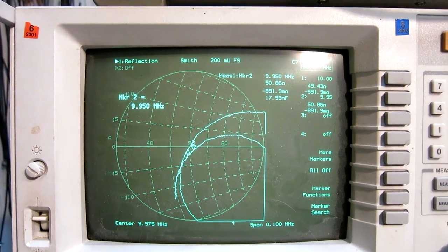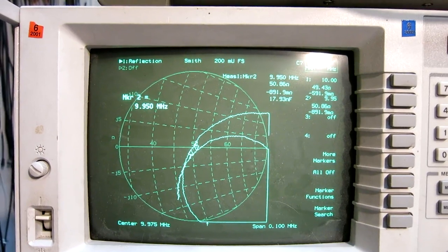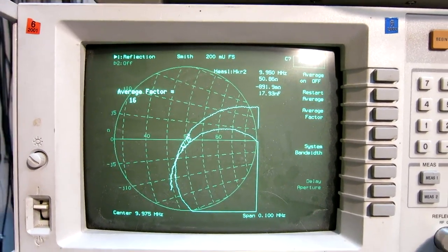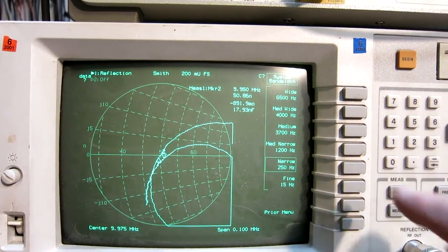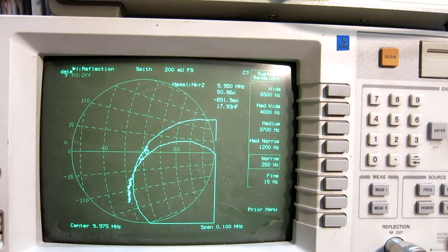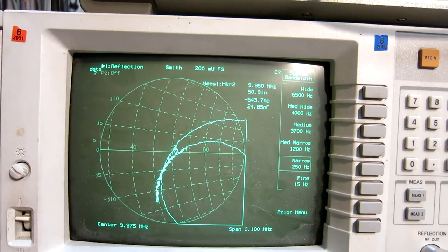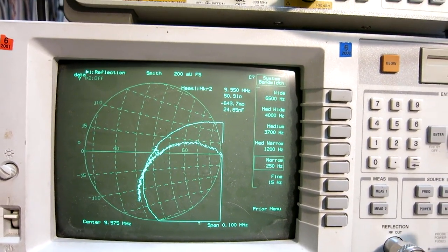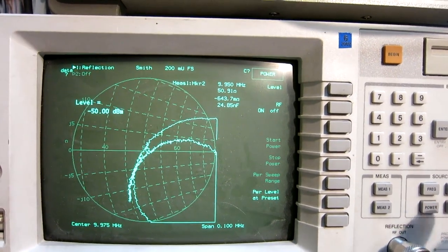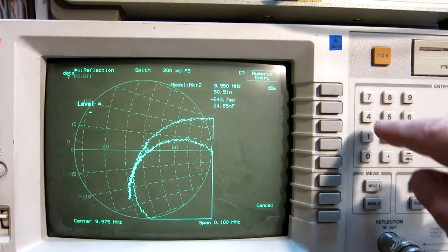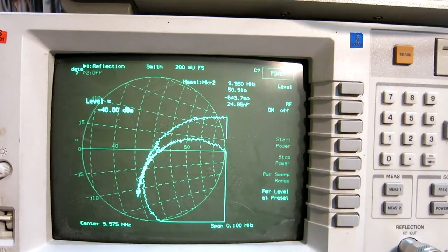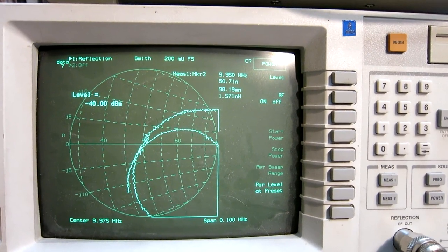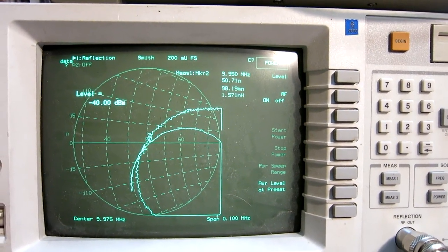Now I will show an interesting phenomenon. First I change the averaging, the system bandwidth, because it's very slow now. And you see the curve is more noisy, but it's more rapid. And then I change the power to minus 40 dBm. And you could see a small change of the impedance.